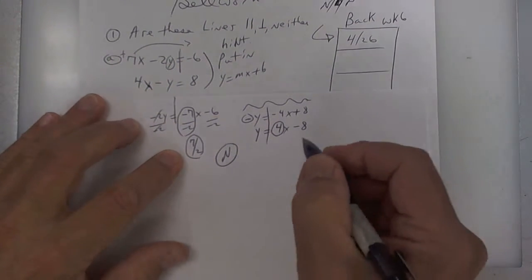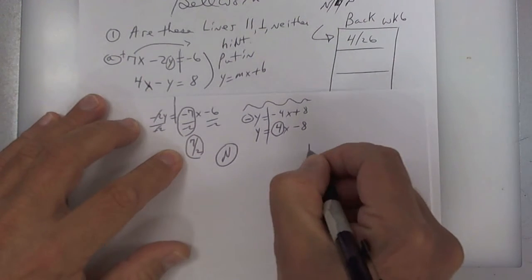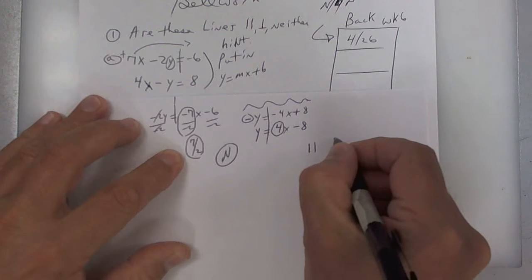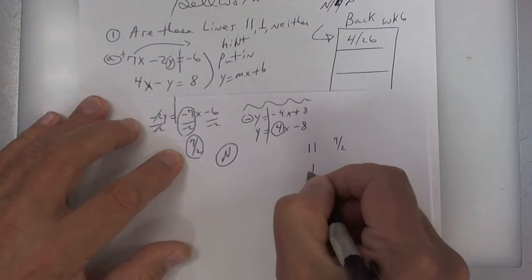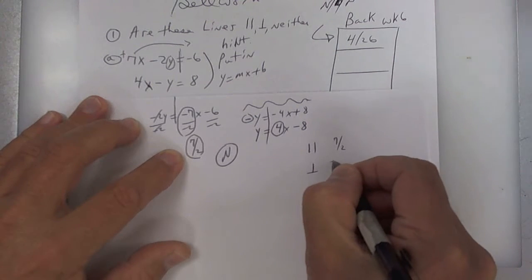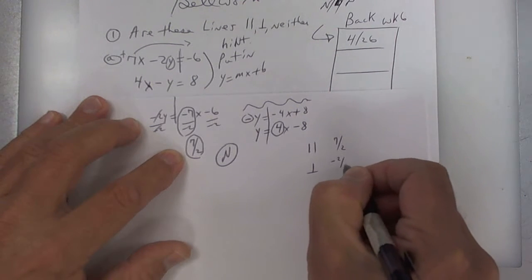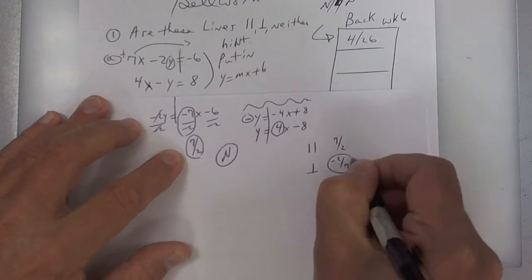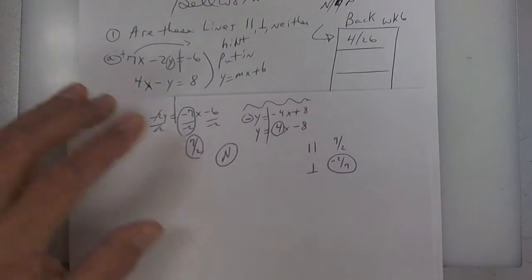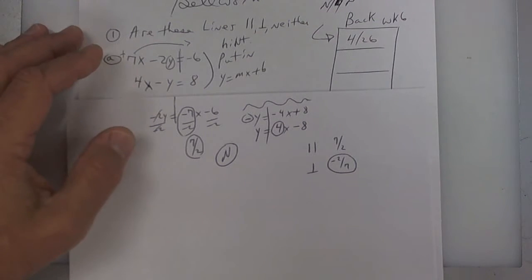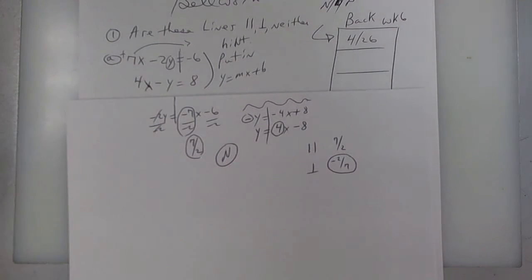To be parallel, it would have to have the same slope, so it would have to be 7 over 2. To be perpendicular, you'd have to flip it and change it. The book says negative reciprocal, so make sure you know it that way, but we say flip change.